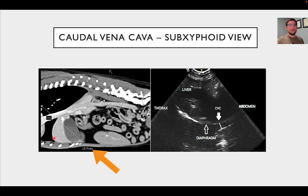The caudal vena cava brings blood from the abdomen back to the heart and right atrium. You can see part of the liver, lungs, a little of the heart, and the gallbladder. Put the probe behind the sub-xiphoid cartilage directed toward the chest, and the ultrasound beam travels from the skin through the gallbladder, through the liver, and then hits the caudal vena cava. Everything below the diaphragm is the caudal vena cava; everything above is chest.